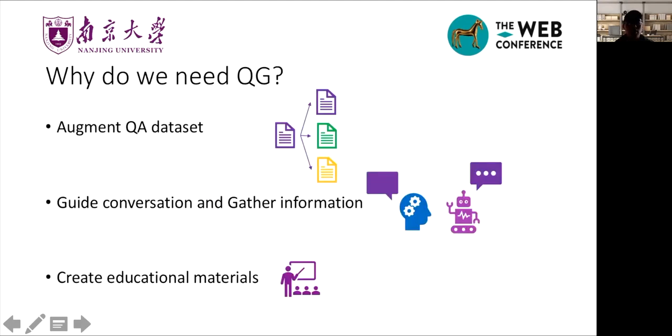So why do we need to do research in QG area? There are at least three applications of QG systems. First of all, QG can automatically augment question-answering datasets. As we all know, the improvement of QA performance partly depends on the emergence of large datasets. Hand-collected QA datasets are high-quality, however, they're expensive because they require lots of labor. In this aspect, automatically generated QA data is valuable.